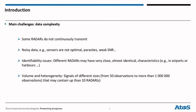We have identified four main challenges about the data that makes them complex. As you may know, some radars don't continuously transmit. When we work, the quality of the data is not always good. For example, sensors are not optimal, we have parasites, weak signal to noise ratio. We have some identifiability issues. Different radars may have very close, almost identical characteristics, for example in airports or airborne.